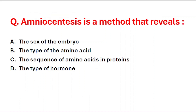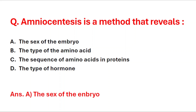Next question: amniocentesis is a method that reveals — A: the sex of the embryo, B: the type of amino acid, C: the sequence of amino acids in proteins, D: the type of hormone. Amniocentesis is a method that reveals the sex of the embryo, so option A is the right answer.